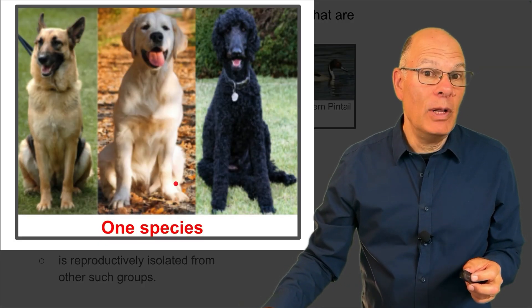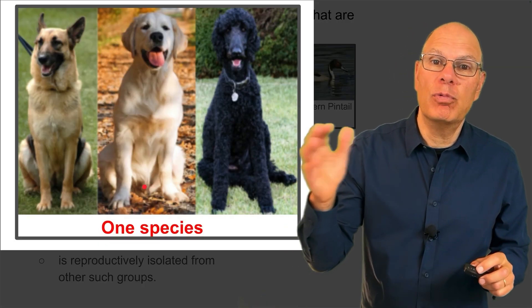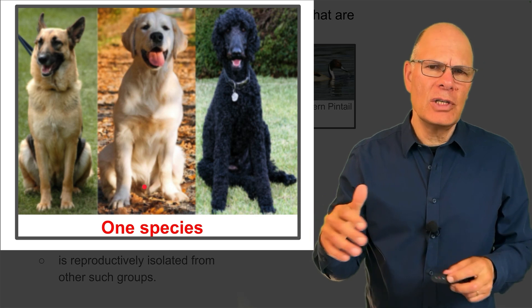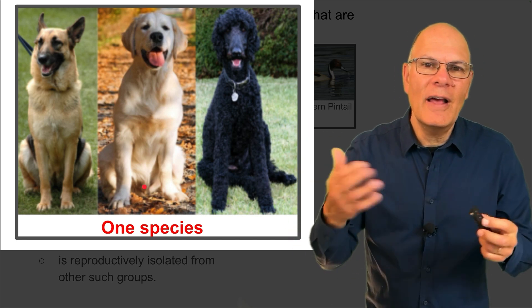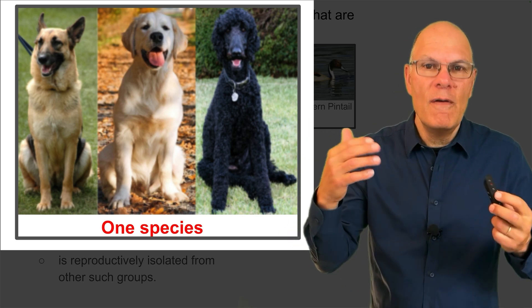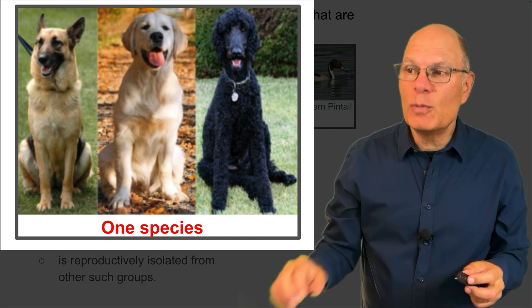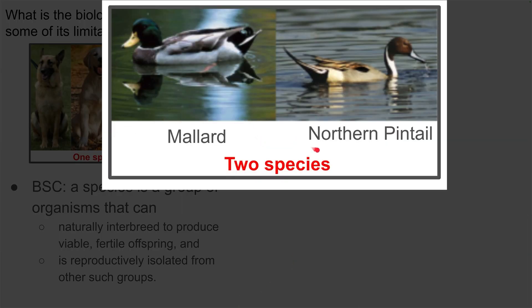Here is an example of one species. There are different breeds of dogs, but the dogs don't care. Left to their own devices, they'll interbreed and produce viable, fertile offspring. These two species of ducks, by contrast, don't interbreed, or at least they interbreed to such a small degree that their gene pools are separate.